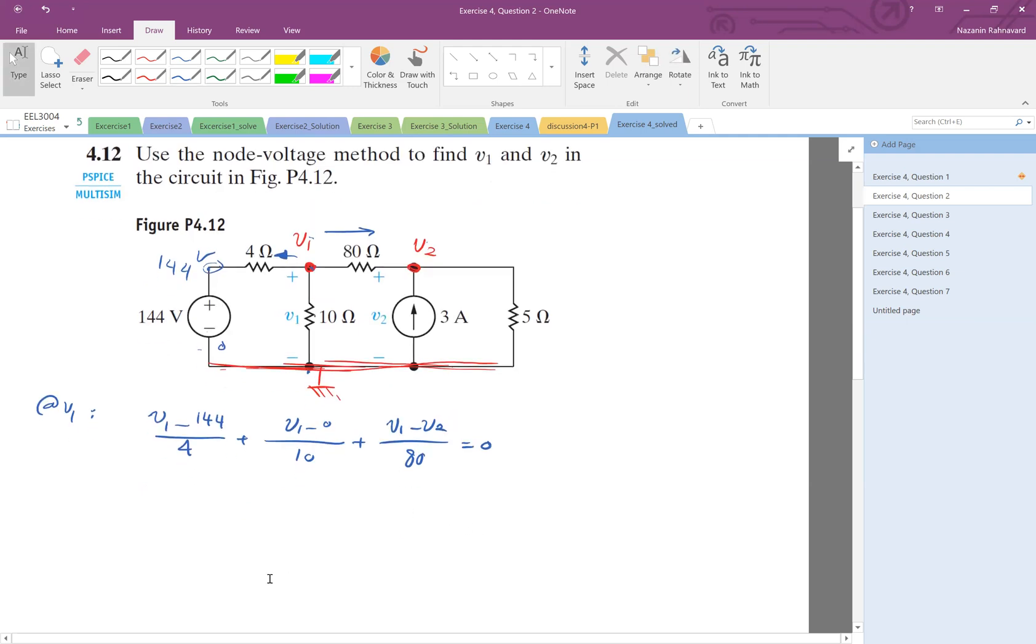This is the equation for node V1. Now node V2, let's look at this current. This current is actually negative 3 amperes, because 3A is going up, so negative 3A is going down. Then this current is V2 minus 0 divided by 5 equals zero.